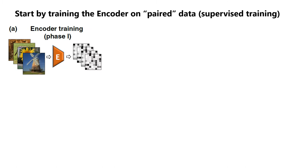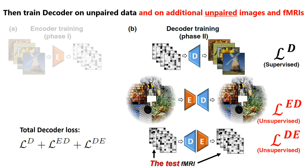Coming to our method, we conduct training in two phases. In the first phase, we train the encoder alone in a supervised way, enabling it to converge first and serve as strong guidance for the decoder, which is trained next. In the second phase, the encoder's weights are kept fixed, and we train the decoder on three objectives simultaneously within each single batch: supervised training on paired training data, unsupervised training on unpaired natural images, and unsupervised training on unpaired test fMRI data.